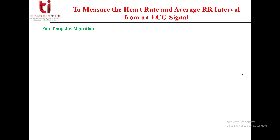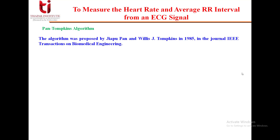We have the Pan-Tompkins algorithm. This is a method which we mainly use to detect the QRS complexes in an ECG signal. It is an extension of the derivative-based method that we have already discussed. This algorithm was proposed by Jiapu Pan and Willis J. Tompkins in 1985 in the journal IEEE Transactions on Biomedical Engineering.